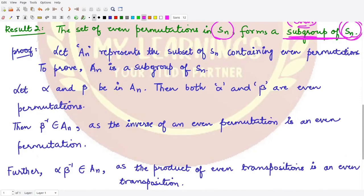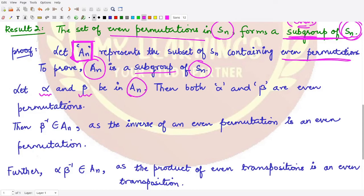If we represent the set of even permutations by Aₙ, it represents the subset of Sₙ which would contain even permutations. You will see in the next video why we have named this as Aₙ particularly. We want to prove that this Aₙ forms a subgroup of the group Sₙ. So we can take two elements - that means two permutations α and β from Aₙ.